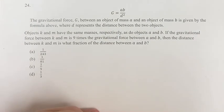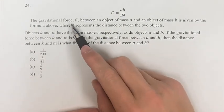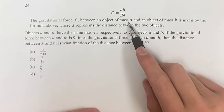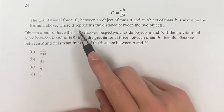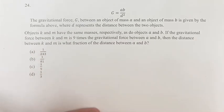Hello and welcome back to another video. In this problem, we're told the gravitational force G between an object of mass A and an object of mass B is given by the formula above, where D represents the distance between the two objects.